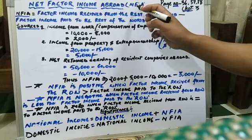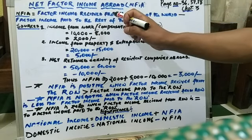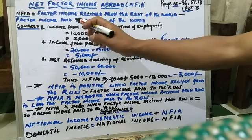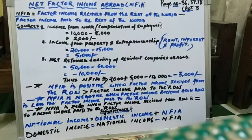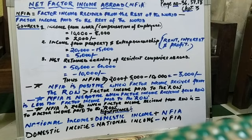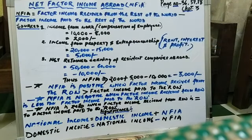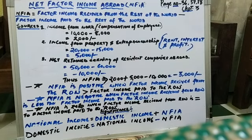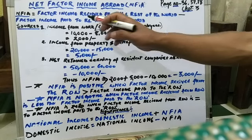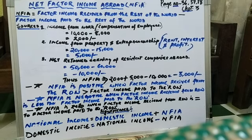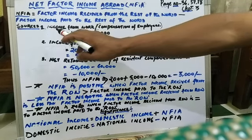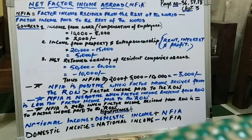So what is Net Factor Income from Abroad? Net Factor Income from Abroad is the difference between factor income received from the rest of the world minus factor income paid to the rest of the world. Factor incomes are incomes generated for rendering services, and they come in the form of rent, wages, interest, and profits. Factor income received from the rest of the world means the total amount of factor income earned by Indian residents outside India, minus factor income paid to the rest of the world, which means the total amount of money earned by non-residents or foreigners in India.